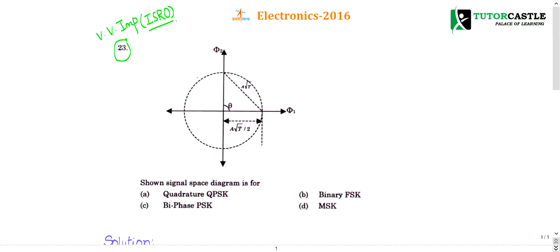Question number 23. The signal space diagram is given, and we are asked which kind of modulation technique it represents. Option A: Quadrature QPSK. Option B: Binary FSK. Option C: Biphase PSK. Option D: MSK.